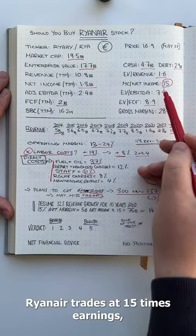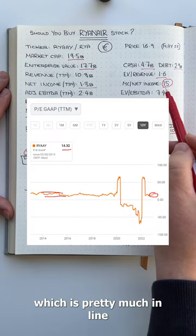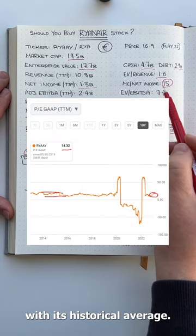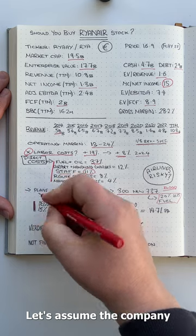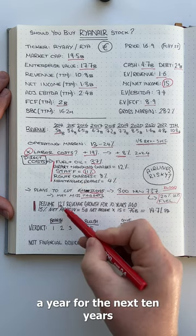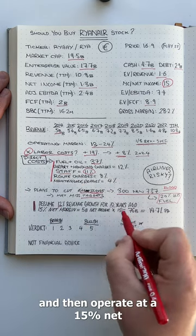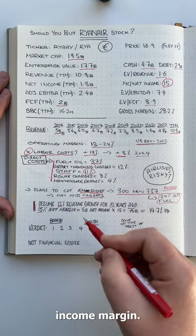Looking at the valuation, Ryanair trades at 15 times earnings, which is pretty much in line with its historical average. Let's assume the company can grow revenues around 12% a year for the next 10 years and then operate at a 15% net income margin.